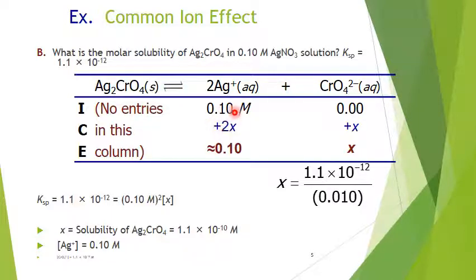And so we go ahead and plug it in. There isn't going to be much change in the silver, so that's going to be 0.1. And we go ahead and solve this. And we do see that now the solubility of the silver chromate is 1.1 times 10 to the minus 10. So it's gone from 1 in 10,000 to just about 1 in 10 billion. That's how much this has forced the reaction to the left.